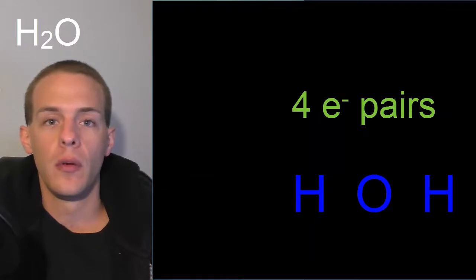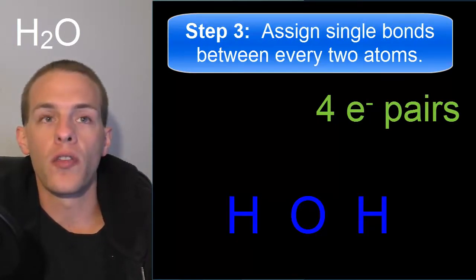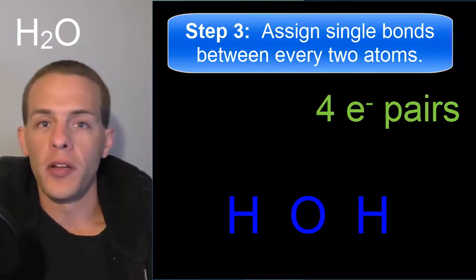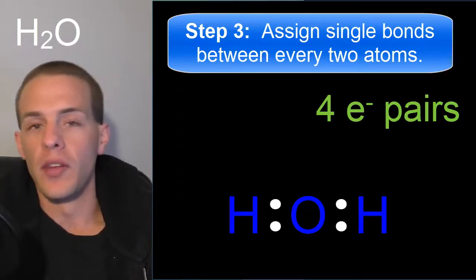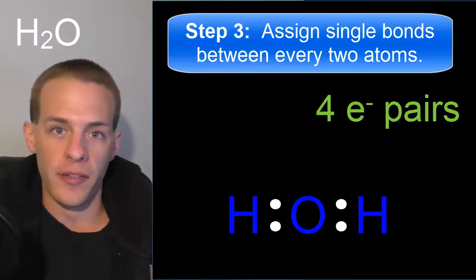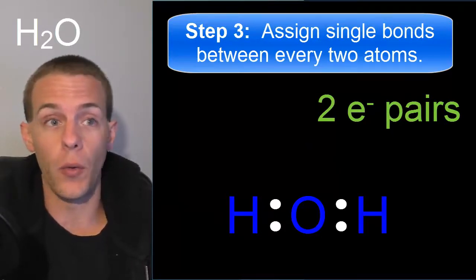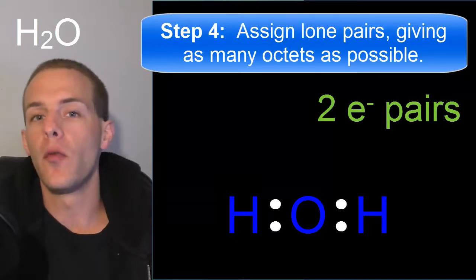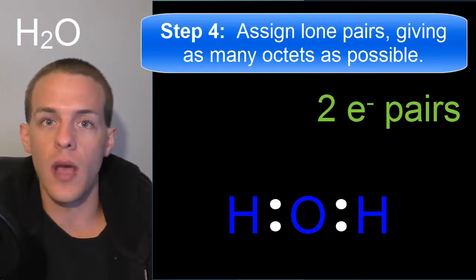In the case of water, the only possible central atom is the oxygen. We have four electron pairs. Step three is to assign electron pairs as single bonds between every two atoms in the structure. We put a pair of electrons to make a single bond between the oxygen and each hydrogen. I like to keep a running count: we started with four electron pairs, used two for the single bonds, so we have two electron pairs remaining.